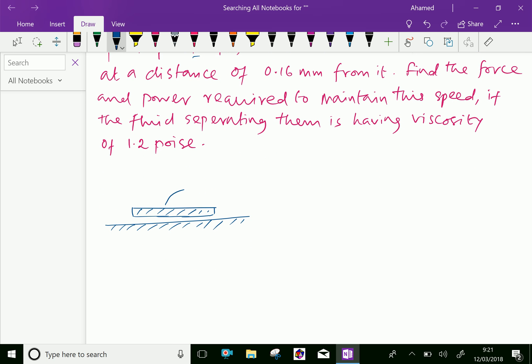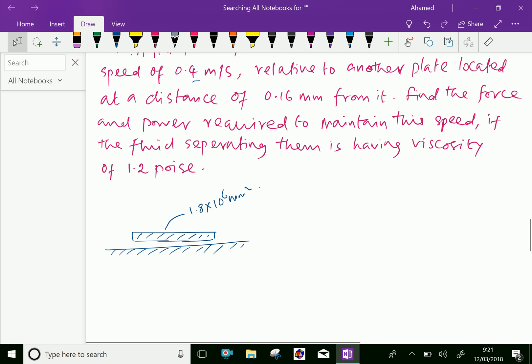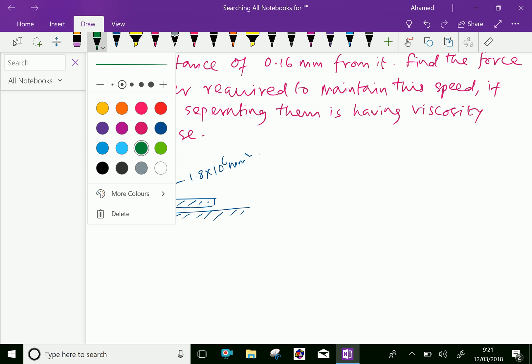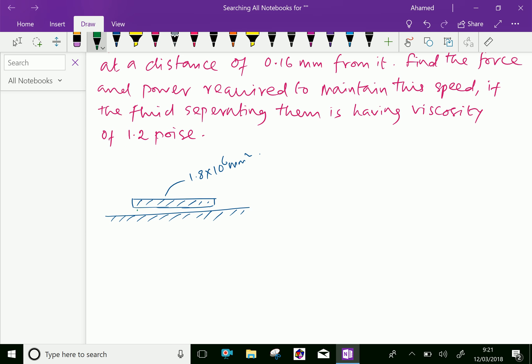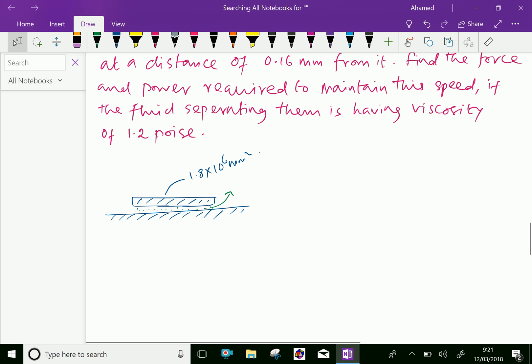Here the area is 1.8 into 10 to the power of 6 mm square. The supposed square plate is lying between. Between is an oil having thickness 0.16 mm.